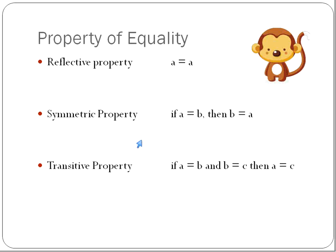The symmetric property: if A is B, then B is A. It looks very symmetric — A, B and then B, A. It's just saying if one thing's equal to it, you can kind of switch the order. We use this a lot, but we oftentimes don't identify it as the symmetric property.